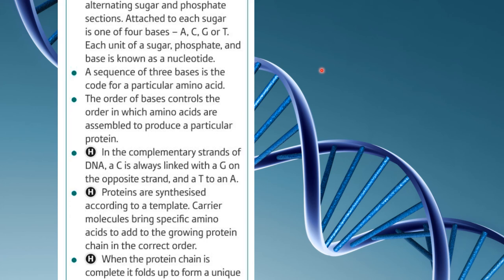You can now link the structure of DNA to its function, because the great long chain of bases in a very particular order is what produces the many different types of protein used to structurally build cells, as enzymes to catalyse reactions, as hormones, and as chemical messengers. All of those different instructions are produced in exactly the same way as the process discussed today. Proteins are synthesised according to a template, and when the protein chain is finished, it folds up into a unique shape related to the function that protein needs to carry out.